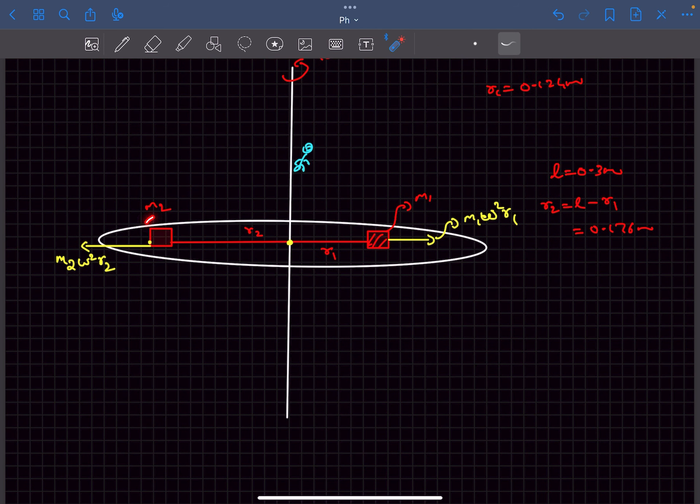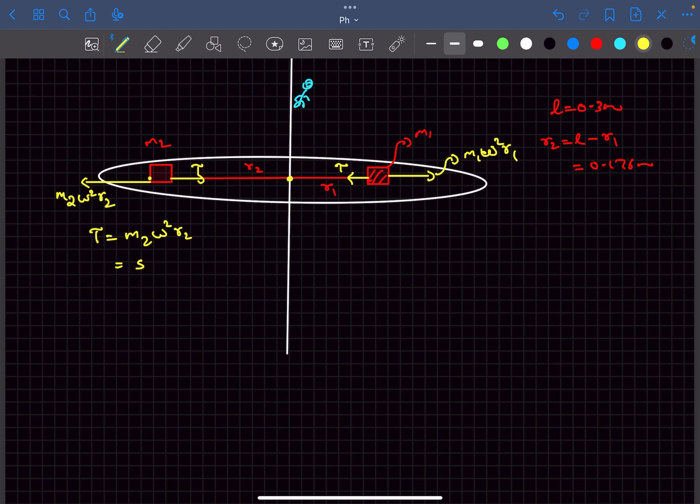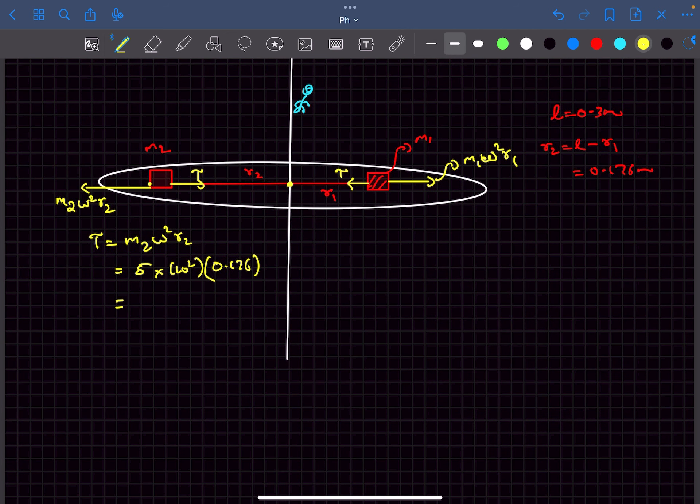Now if we observe block m2 there is no friction between block m2 and the disc. So the only other force acting on block m2 in the radial direction is the tension. Now this block is at rest as we are in the frame of reference of the disc. So we can simply say T equals m2 omega squared r2. So now we have the tension in the string. So if we calculate this, m2 is given to be 5, omega is given to be 10, r2 is 0.176. So the tension in the string comes out to be 88 newtons.